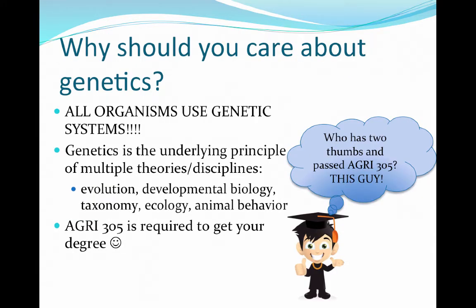So why should you care about genetics? Because you're in an agriculture class, I'm hoping that you guys have a little bit of science background and interest. The easy answer is because all organisms actually use genetic systems. Genetics are the underlying principle of many different theories and disciplines, such as evolution, developmental biology, taxonomy, ecology, as well as animal behavior. And if those two reasons aren't good enough for you, you need Agra 305 to get your degree.